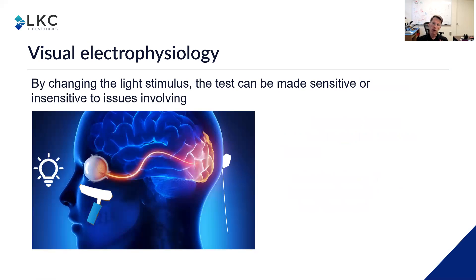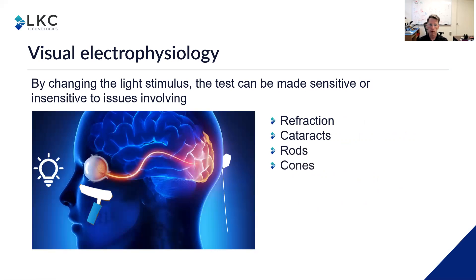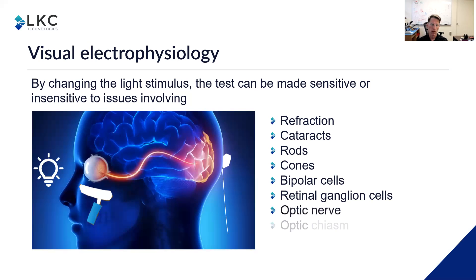Not only by changing the location of where you record from, but also by changing the light stimulus, the test can be made sensitive or insensitive to issues involving refraction, cataracts moving further into the eye, the rods and the cones, the photoreceptors, the bipolar cells which receive information from the photoreceptors, the retinal ganglion cells which are also in the retina, which receive information from the bipolar cells. Those retinal ganglion cells also form part of the optic nerve, going to the optic chiasm, and finally to the visual cortex. So all these different areas of the visual system can be either made sensitive to or insensitive to in visual electrophysiology testing.